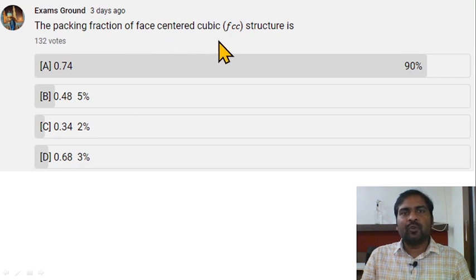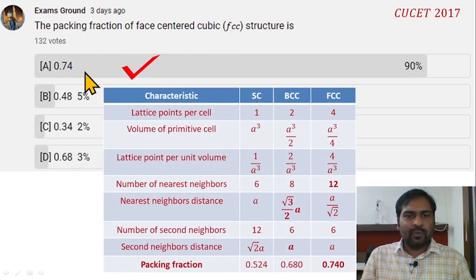The packing fraction of face centered cubic FCC structure is 0.74. Option A is correct here, and other parameters are also listed here. You can learn it for exams.